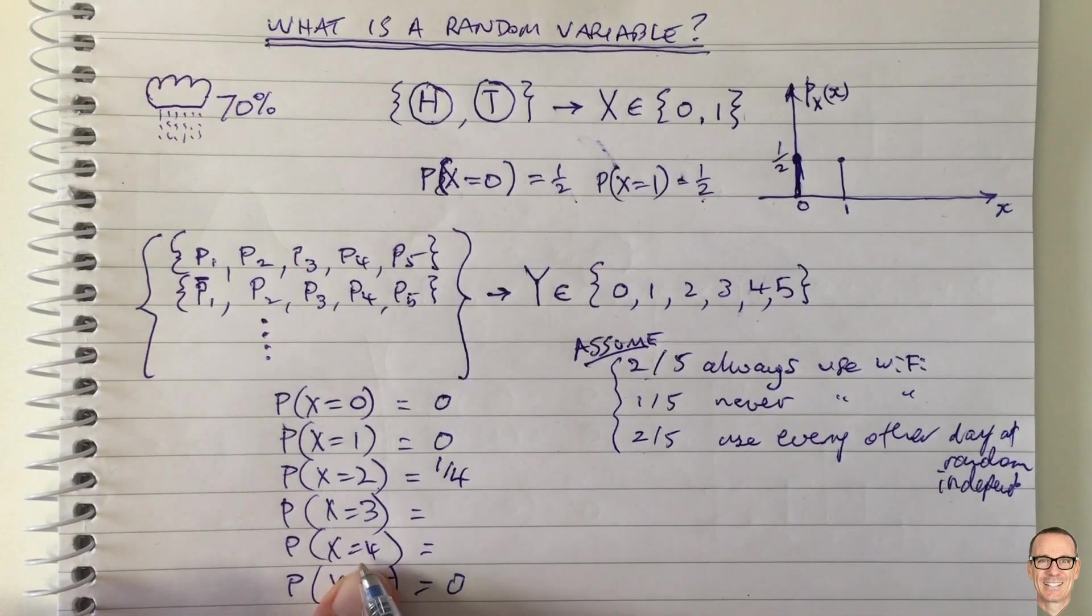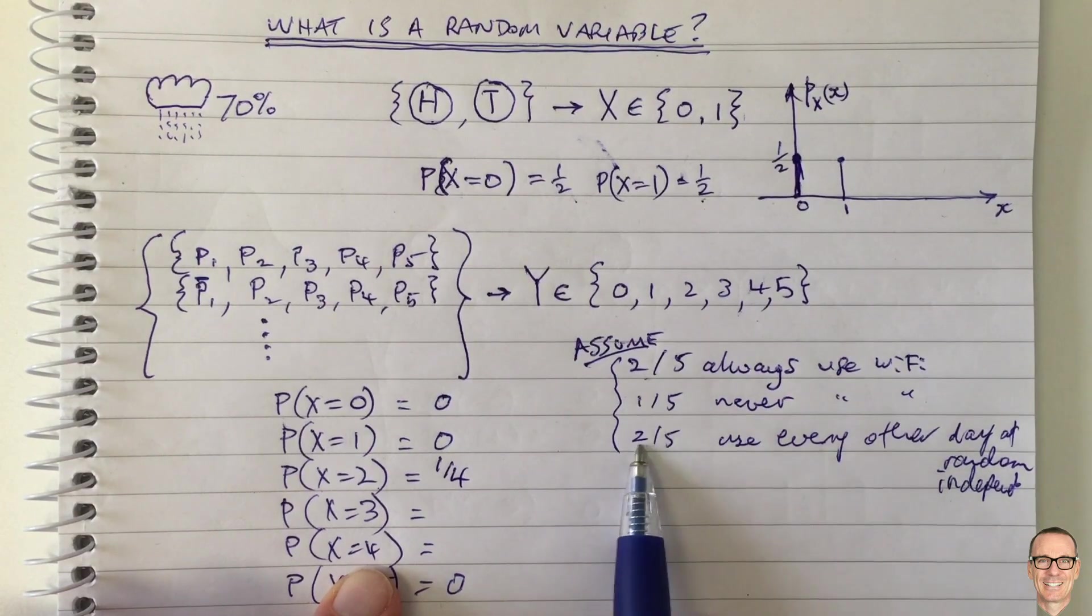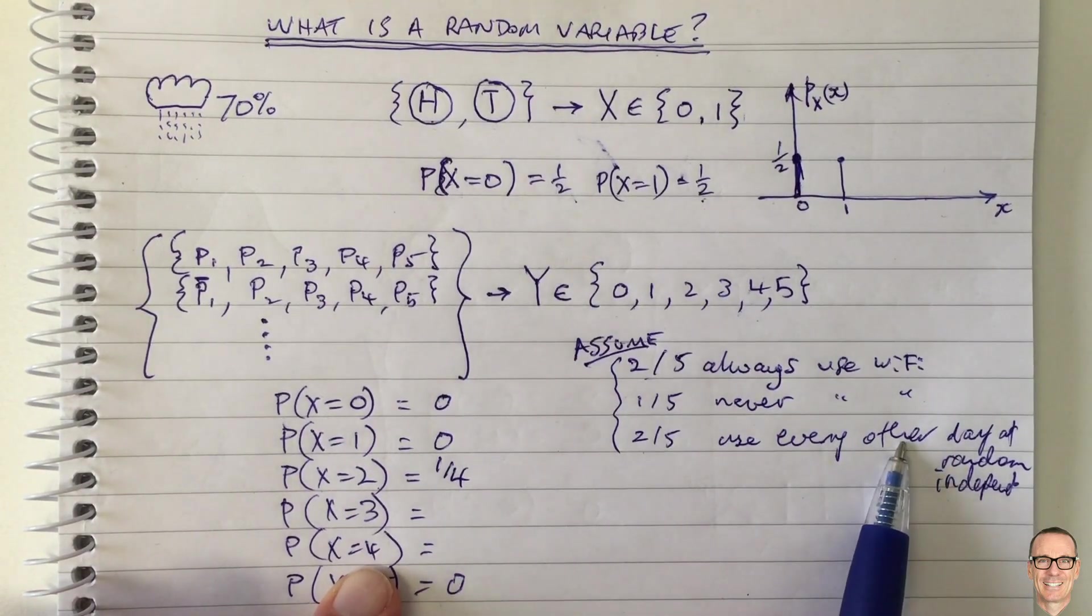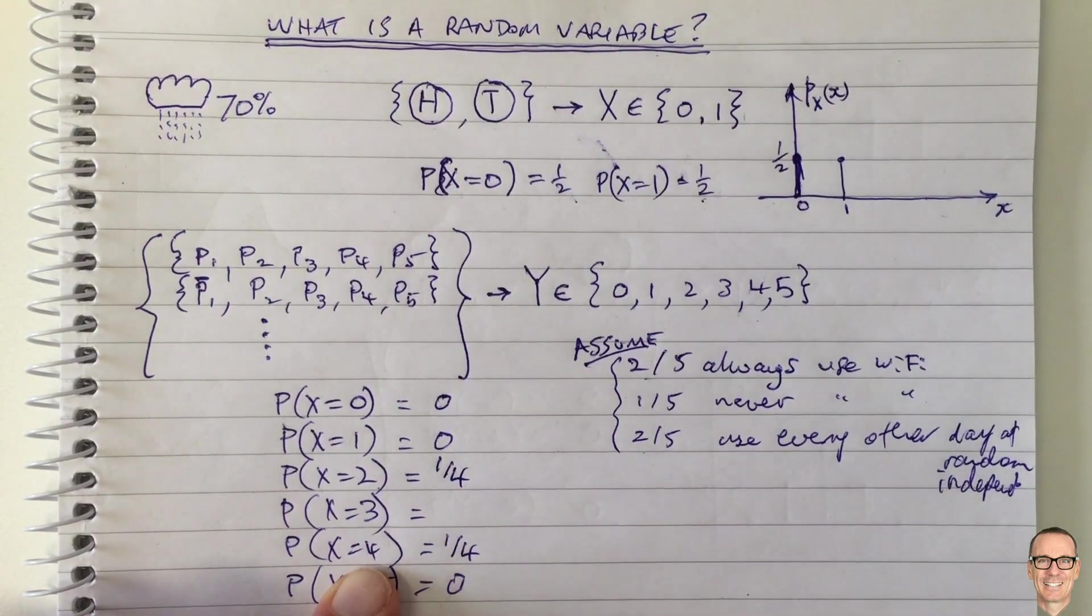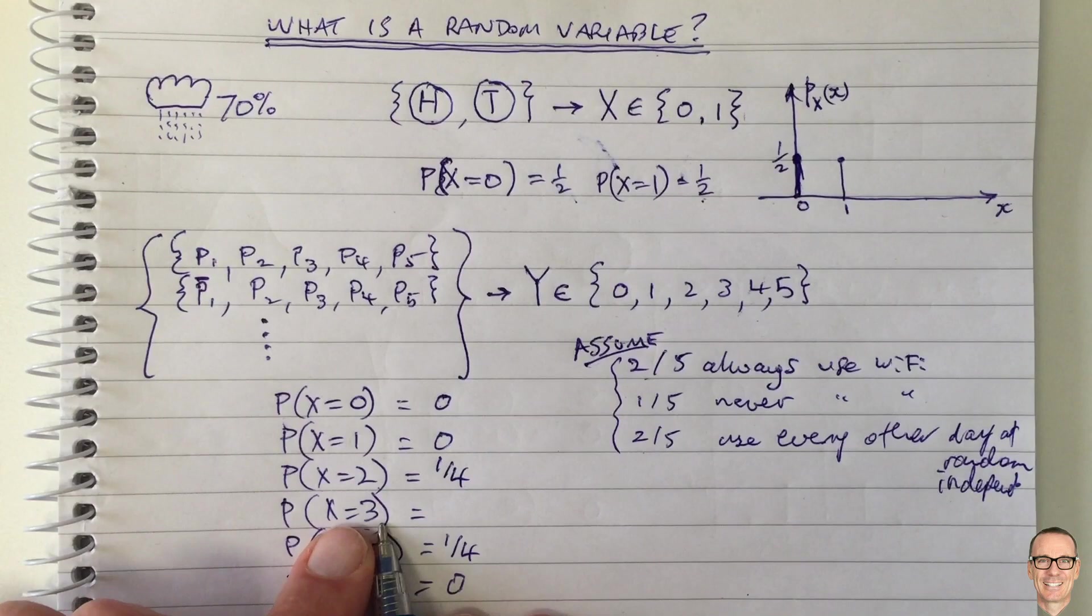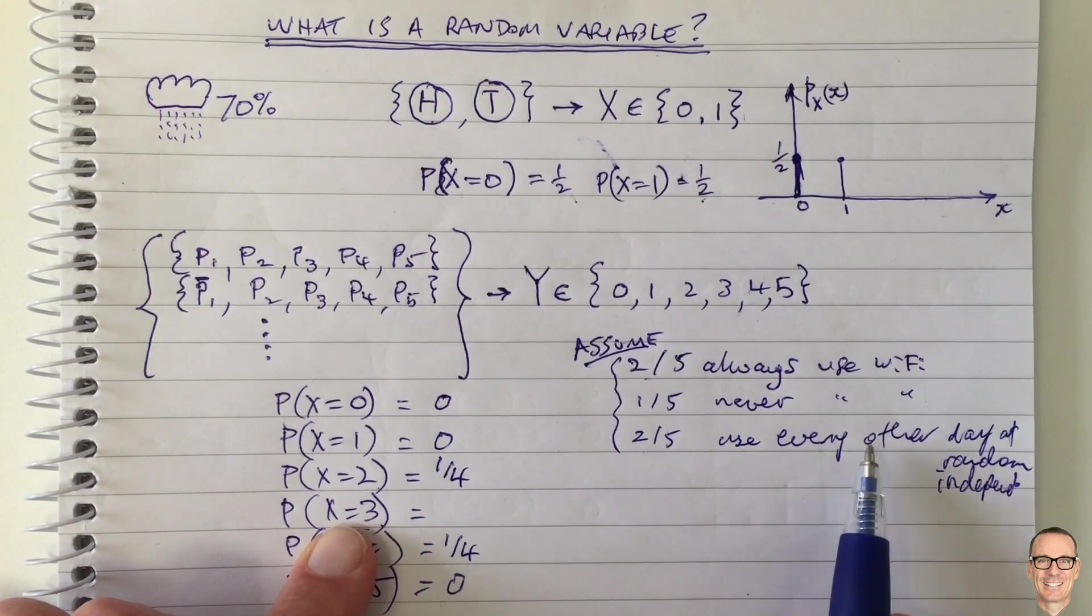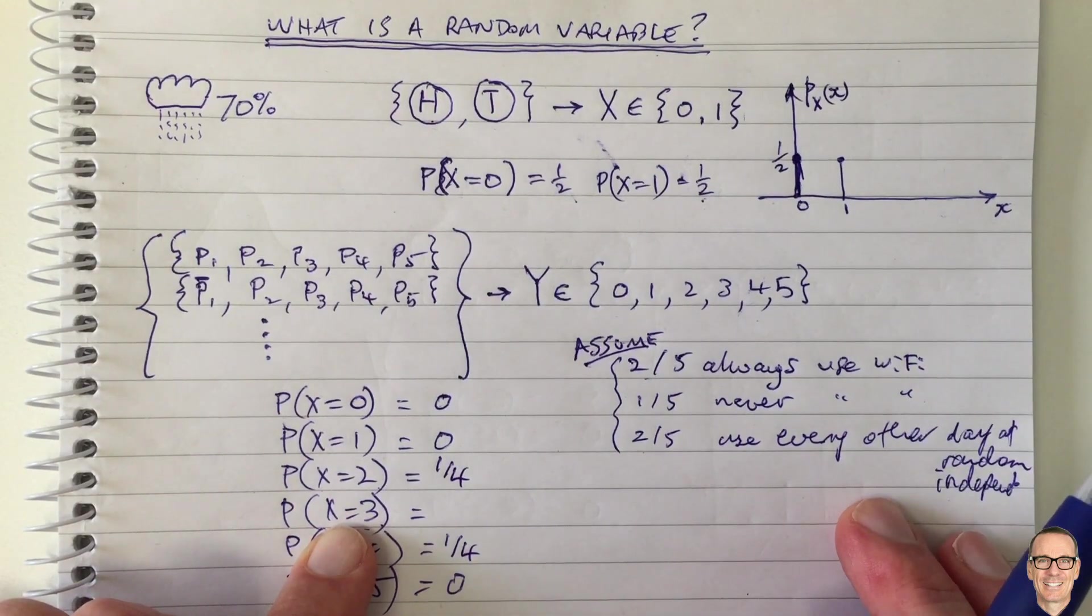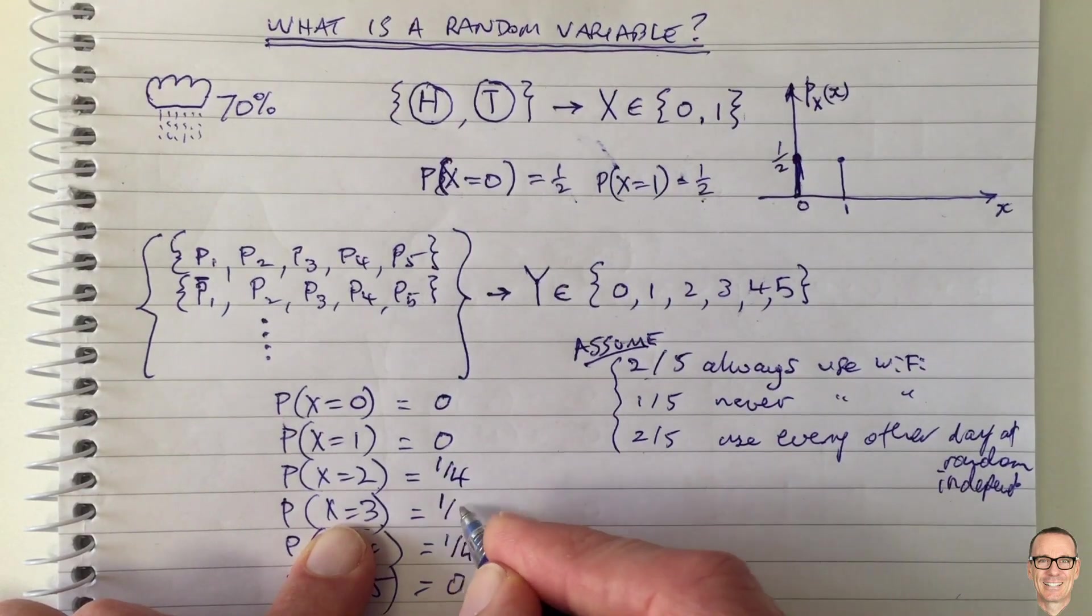It's also the case it'll be a quarter for having four, because to have four you'd have these two and these two would have to both be using it. Well, there's a half a chance that one uses, half a chance the other, so the chance that they're both is a quarter. And what's the chance then that you have three people using it? Well, these two are using it, and then you've got to have one out of these two using it. So there's a chance that the first one does and the second one doesn't, or the other way around. So that's in this case a half chance.